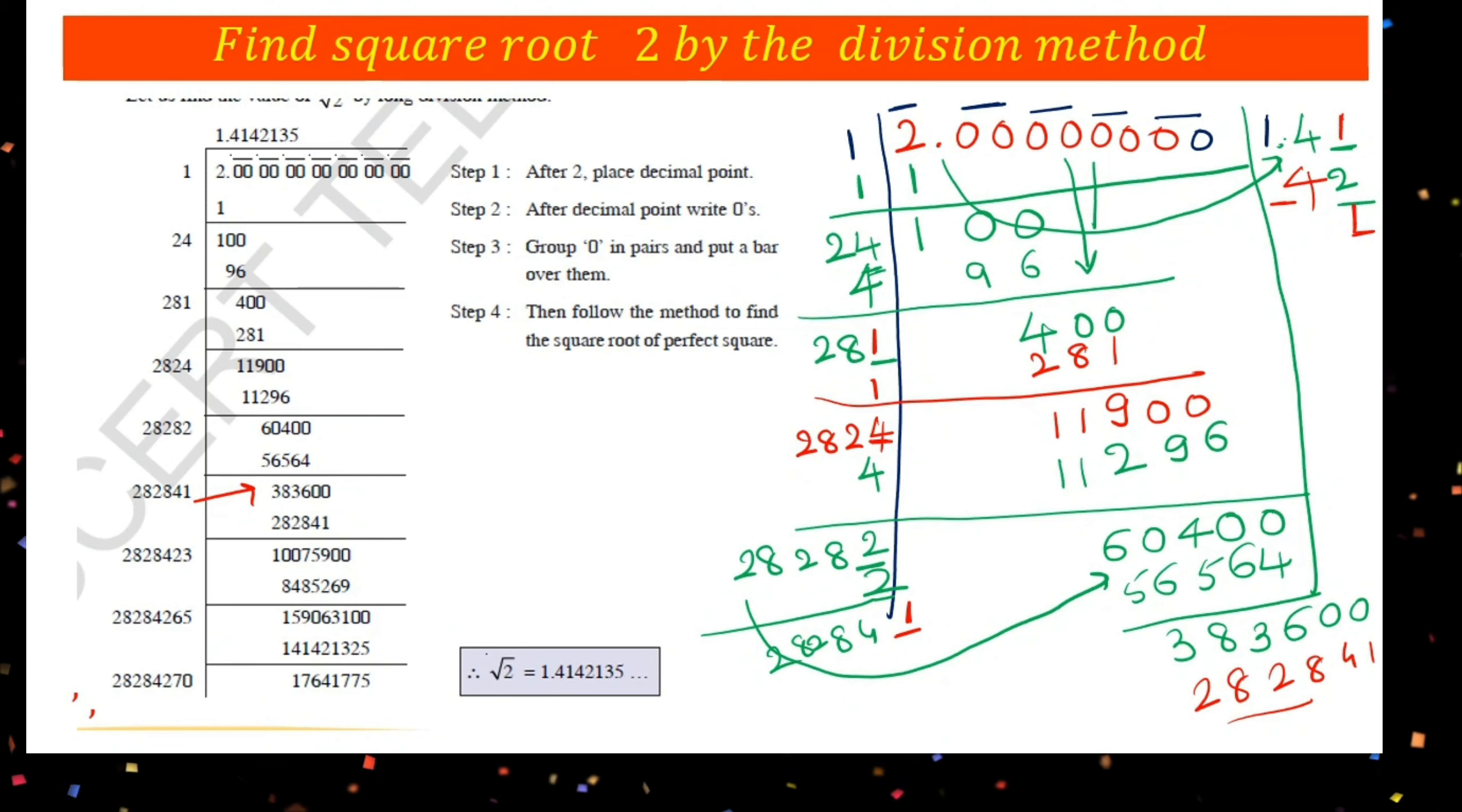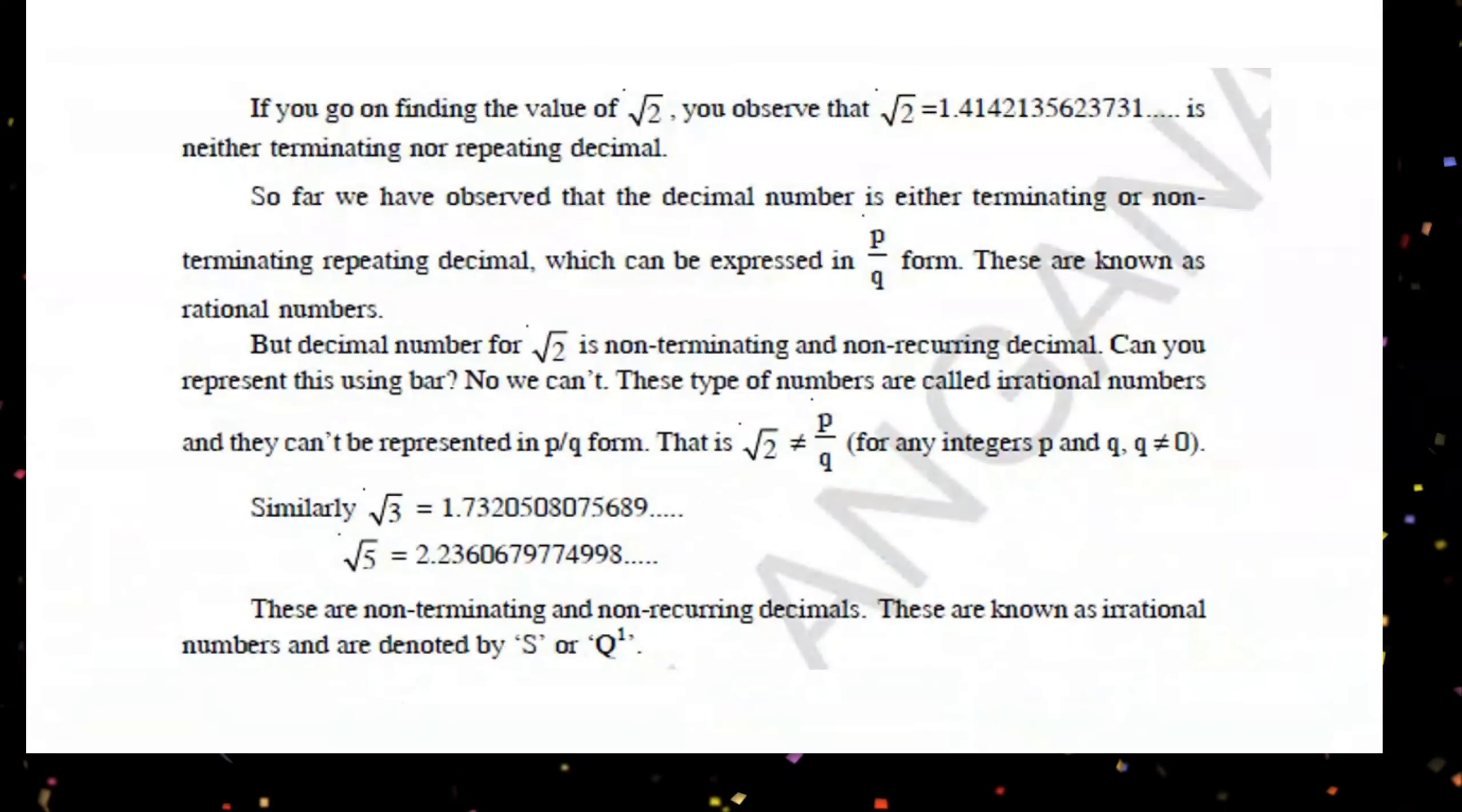The result is 1.41421. If we continue this process, the digits do not repeat. This is a non-terminating, non-recurring decimal: 1.4142135. If you keep finding the value of root 2, you will observe that the root 2 value continues without terminating or repeating.